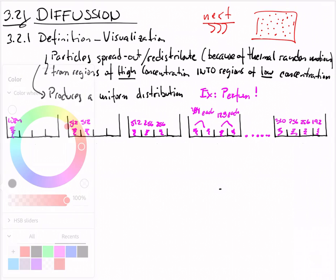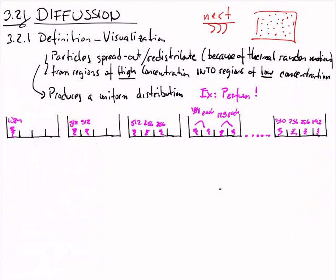We start with 1024 particles. Those 1024 particles distribute first in half, then one half distributes into another half, and so forth, in order to get to a uniform distribution.